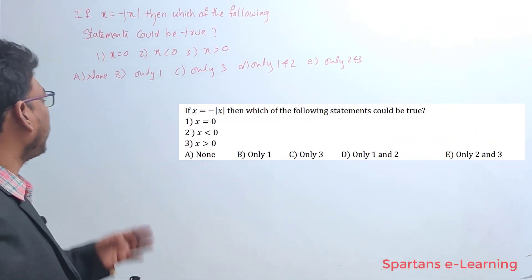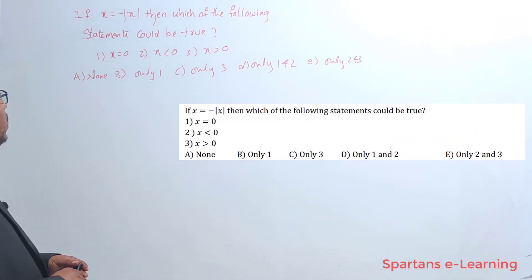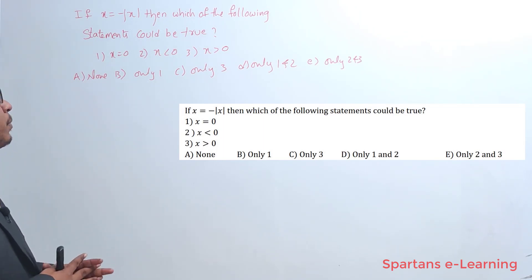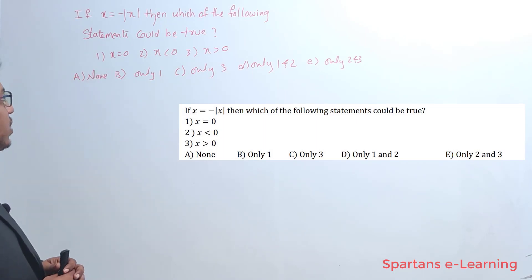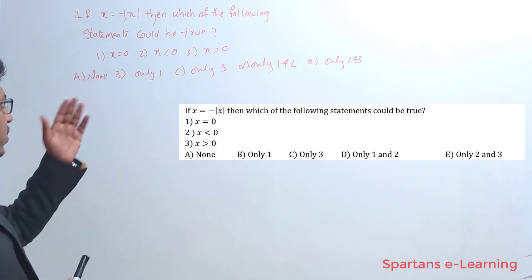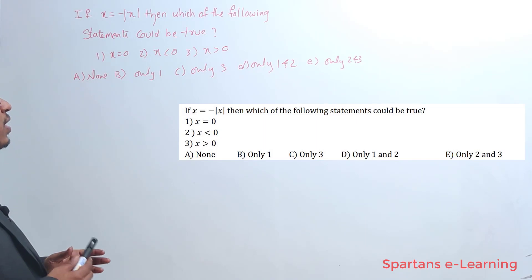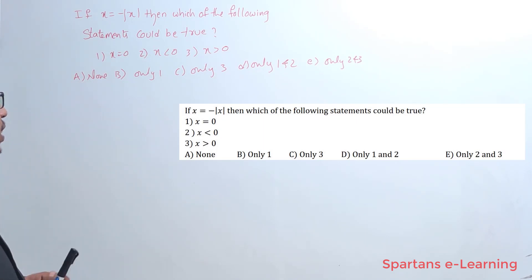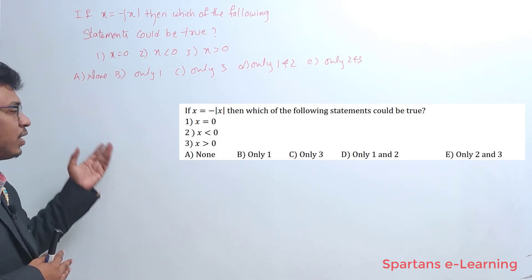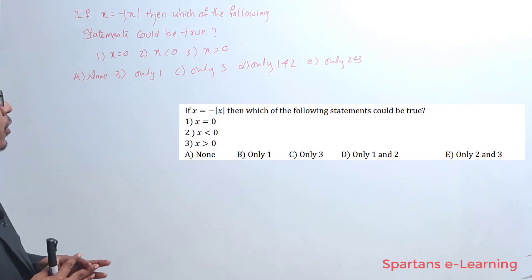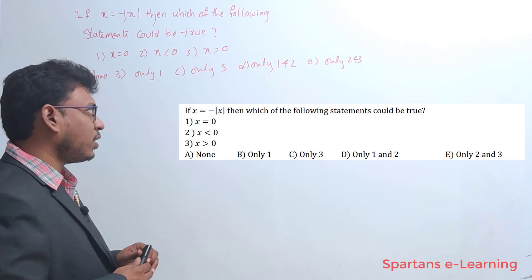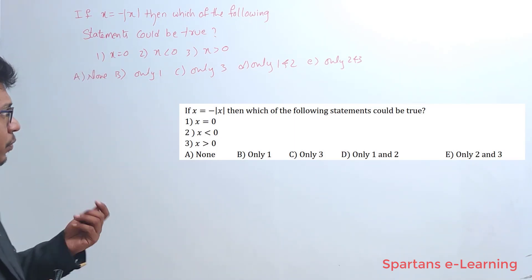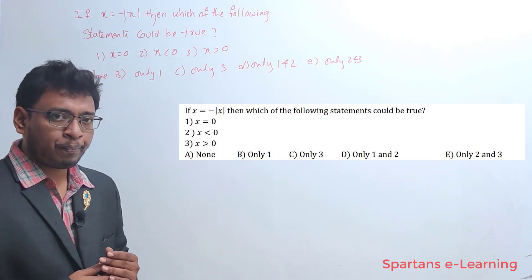Let's solve our next question. The question says: if x = -|x|, then which of the following statements could be true? Statement 1: x = 0. Statement 2: x < 0. Statement 3: x > 0. Options are: A) none, B) only 1, C) only 3, D) 1 and 2, E) 2 and 3. Pause the video and try to solve this on your own.